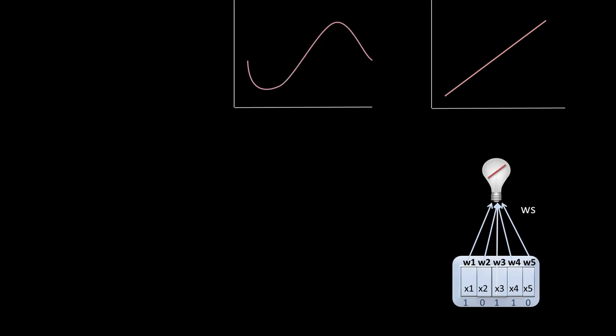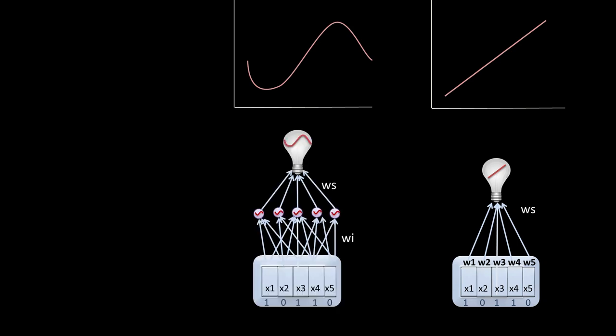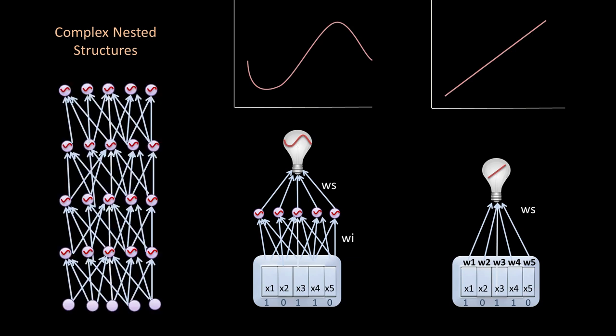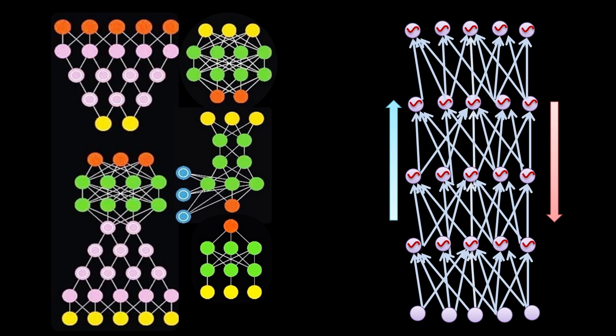Here is some advice: if you have a simple linear relationship then linear regression with a simple perceptron is more than enough. If you have a nonlinear but shallow problem, a simple neural network with one hidden layer is probably enough. If you have complex nested structures then we need a deep neural network with some extra tricks to make it work — for instance, recurrent and sideways connections between layers.